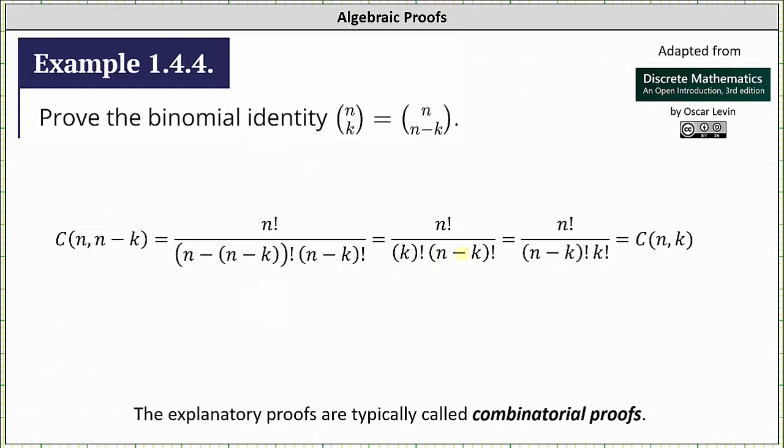Using the commutative property of multiplication, we have n factorial divided by the product of n minus k factorial and k factorial, which is the factorial definition for n choose k.